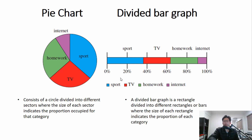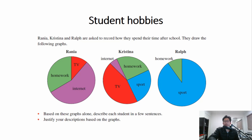The key thing for both of these graphs or charts is the size of each section. If you have a look at both of them, it's pretty clear that sport is what this person enjoys doing most, and internet is what they spend the least time on.